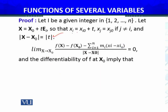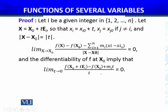The differentiability of f at x0 implies that this limit equals zero. For this particular case, we have limit as t approaches 0 of [f(x0 + tei) - f(x0) - mi·t] divided by |t| equals 0. This will lead us to the partial derivative.